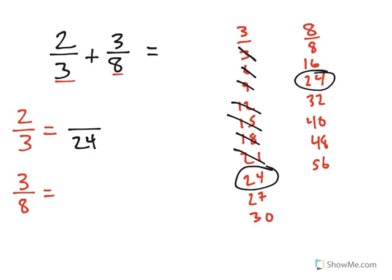Now I'm going to find an equivalent fraction for both of these where 24 is the denominator. Let's start with 2/3. How did I get from 3 to 24 by multiplication? I multiplied by 8, which means I have to multiply the top by 8. 2 times 8 is 16.